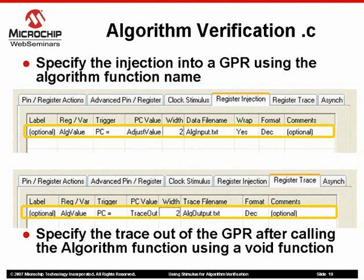Here we have the same views of the register injection and register trace tabs as before, but with modifications to the register and PC value fields for use with the .c code example. The top half register injection shows the register name alg_value and the PC value of adjust_value, which is the function name of the algorithm. The lower half register trace shows the same register name and the PC value of trace_out, which is the function name of the void function.